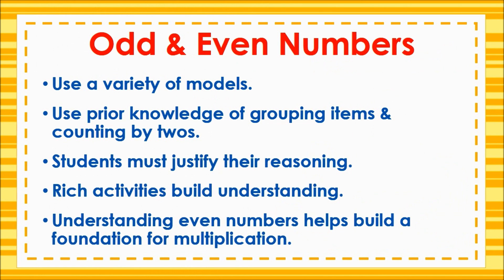To recap: students begin to make sense of odd and even numbers using models such as manipulatives, drawings, and equations. Students will use their prior knowledge of grouping items in different ways and counting by two to help them understand why a number is or is not even. Students must be able to justify their reasoning for why a number is or is not even or odd, and should be able to explain the strategy they used and how that strategy helped them. It is important to choose activities that will help students build understanding rather than rote activities that will not. Finally, working with equal groups to determine even numbers begins to build a foundation for understanding equal groups for multiplication by focusing on multiples of two.